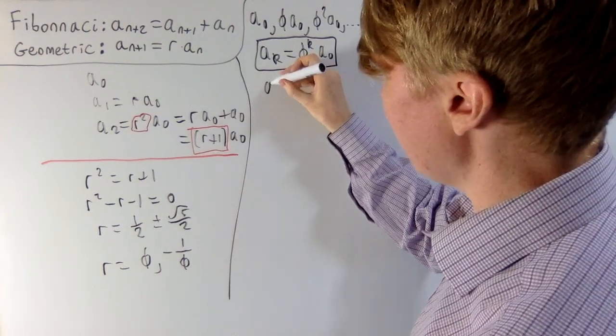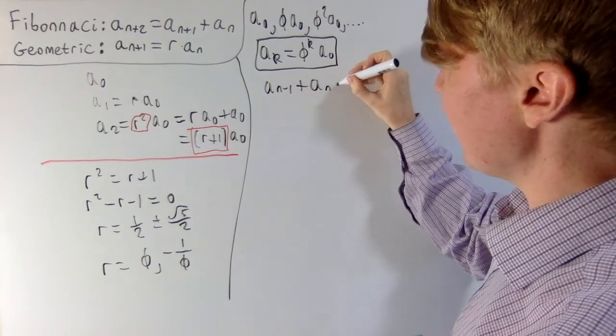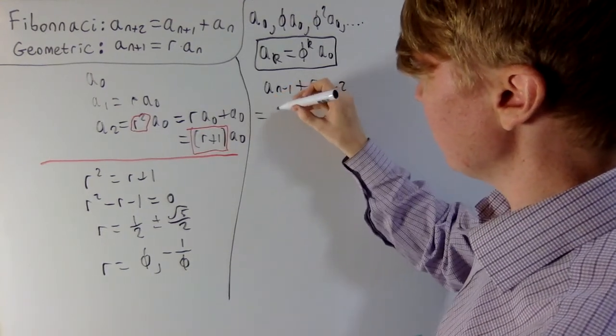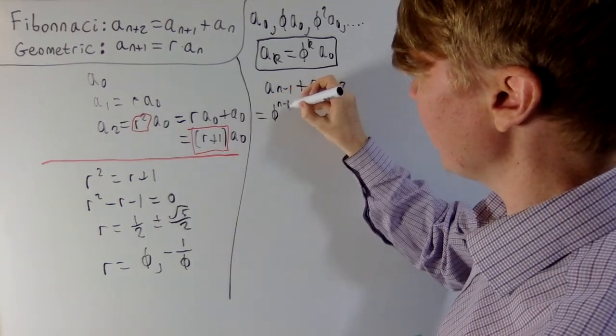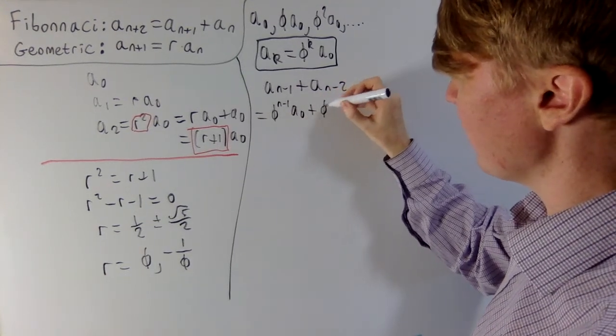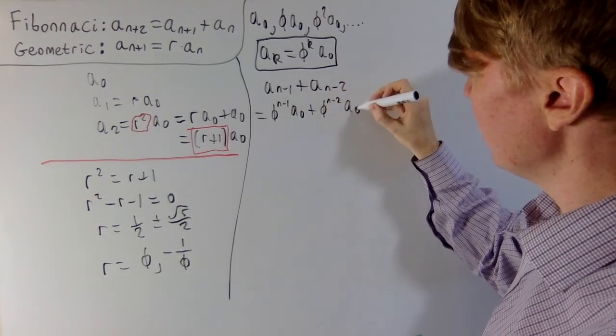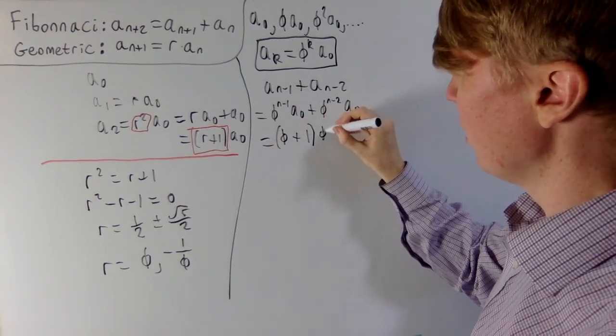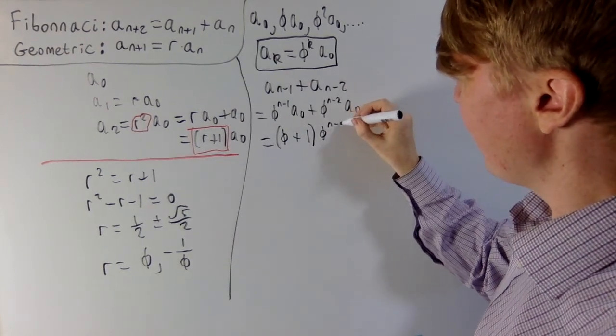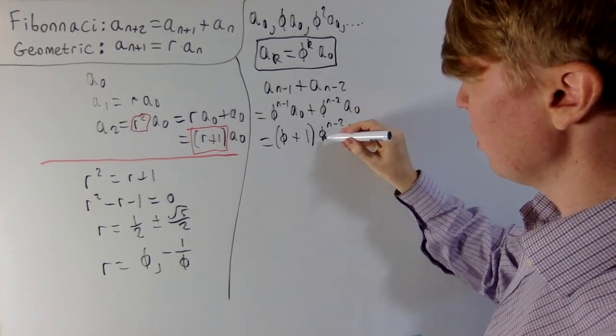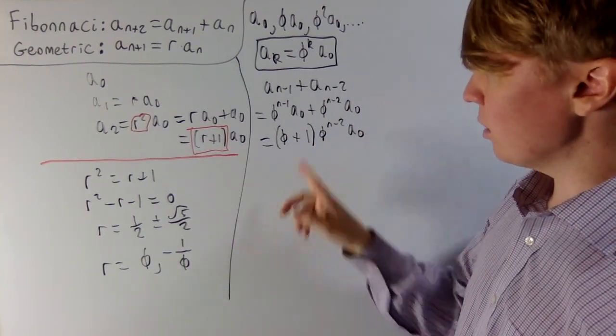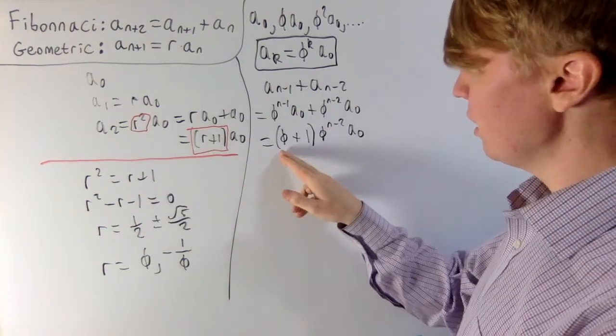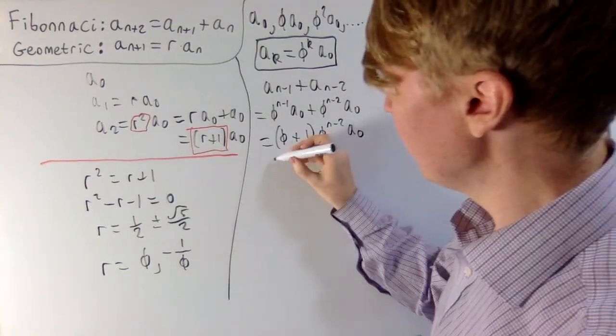So what we'll do is, let's have a look at a n minus 1 plus a n minus 2. So hopefully we can show that the sum of these two terms is equal to a n. So just from the definition, we've got phi to the power of n minus 1 multiplied by your initial term, plus phi to the n minus 2 multiplied by your initial term. Then we can factorise here, we end up with phi plus 1, which goes into phi to the n minus 2 a0. But now, if you remember that phi is a solution to this equation, so phi squared is equal to phi plus 1, really importantly, which means we can replace phi plus 1 here by phi squared.